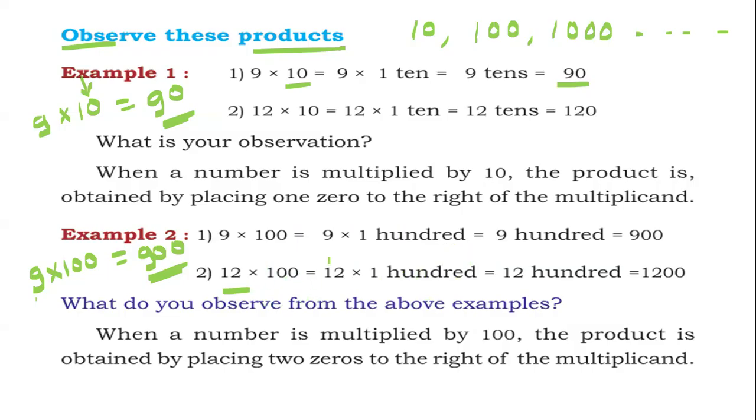12 into 100. Put 12 as it is. How many zeros are there? 2 zeros. 12 with 2 zeros: 1,200.